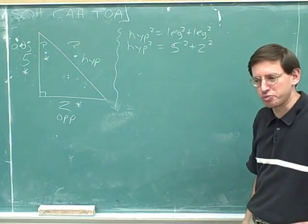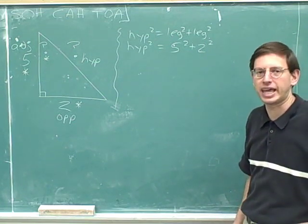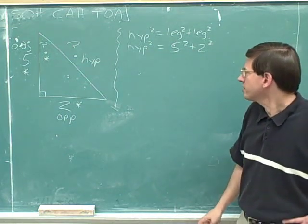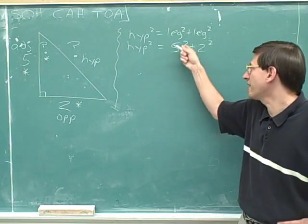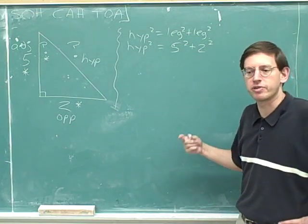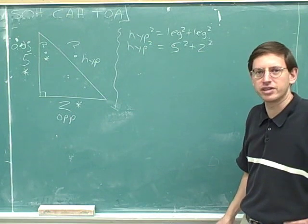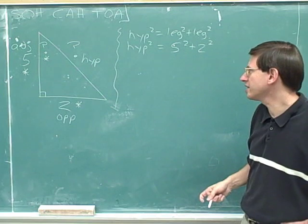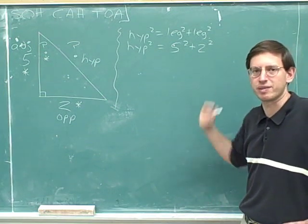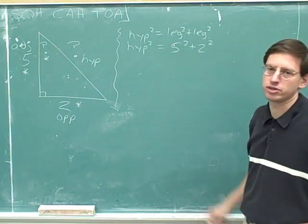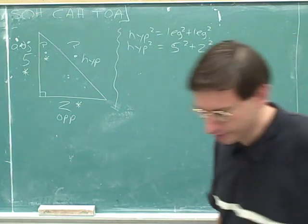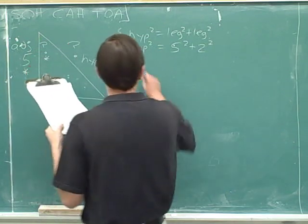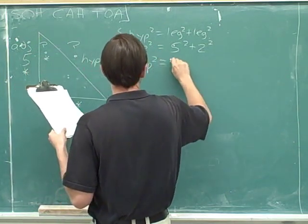Now, you can actually work out this whole calculation here on the right side in one step on your calculator. Or maybe you can just do it in your head. These are pretty easy calculations. But when you're doing actual homework problems, you'll probably have calculations you can't do in your head. So just type in 5 squared plus 2 squared, and that will give you the right answer if you have a decent scientific calculator. Try to get in the habit of doing things in just one step on your calculator when you can.